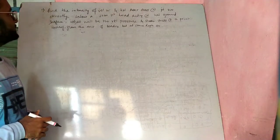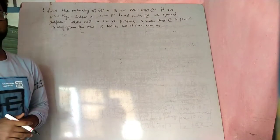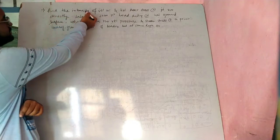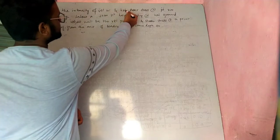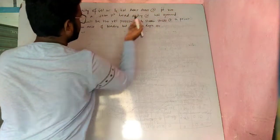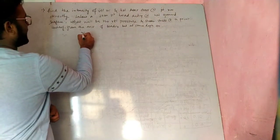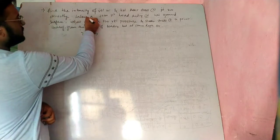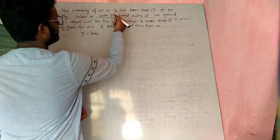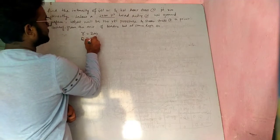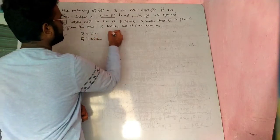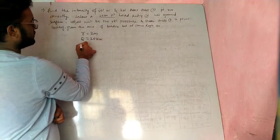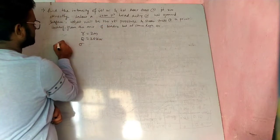Let's begin the problem on stress in soils. We need to find the intensity of the vertical pressure and the horizontal shear stress at r equal to 2 meter, z equal to 0.2 meter, directly below a point load q equal to 20 kilonewton acting at a horizontal ground surface.